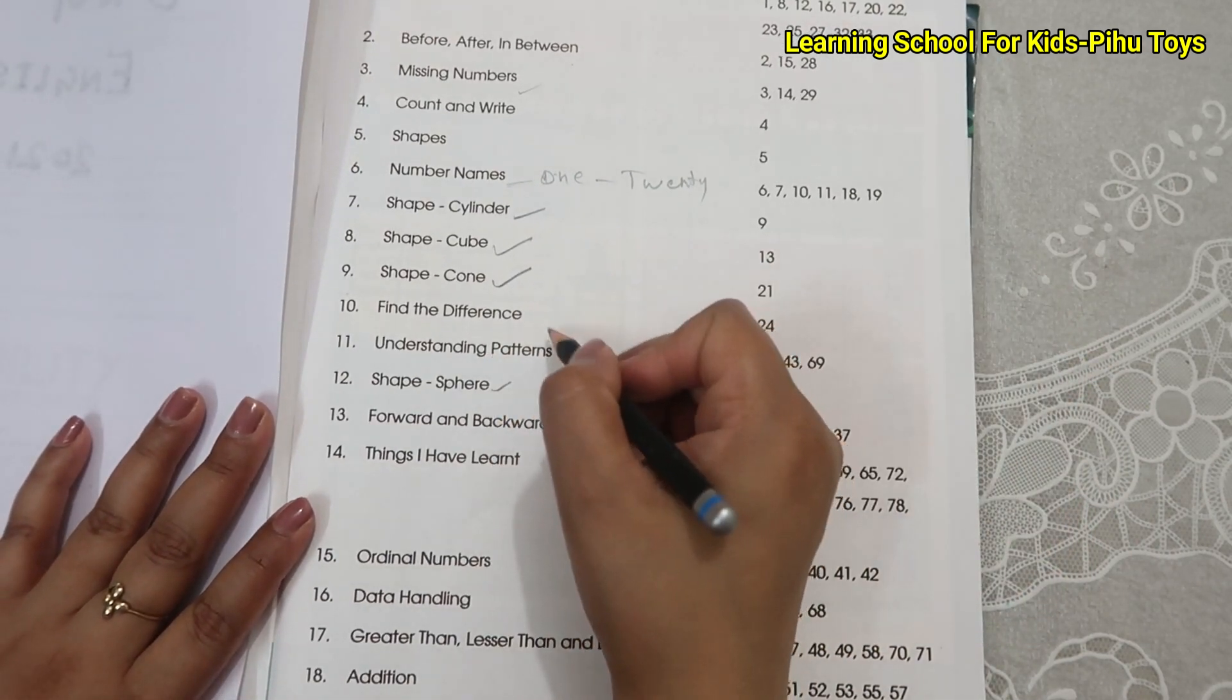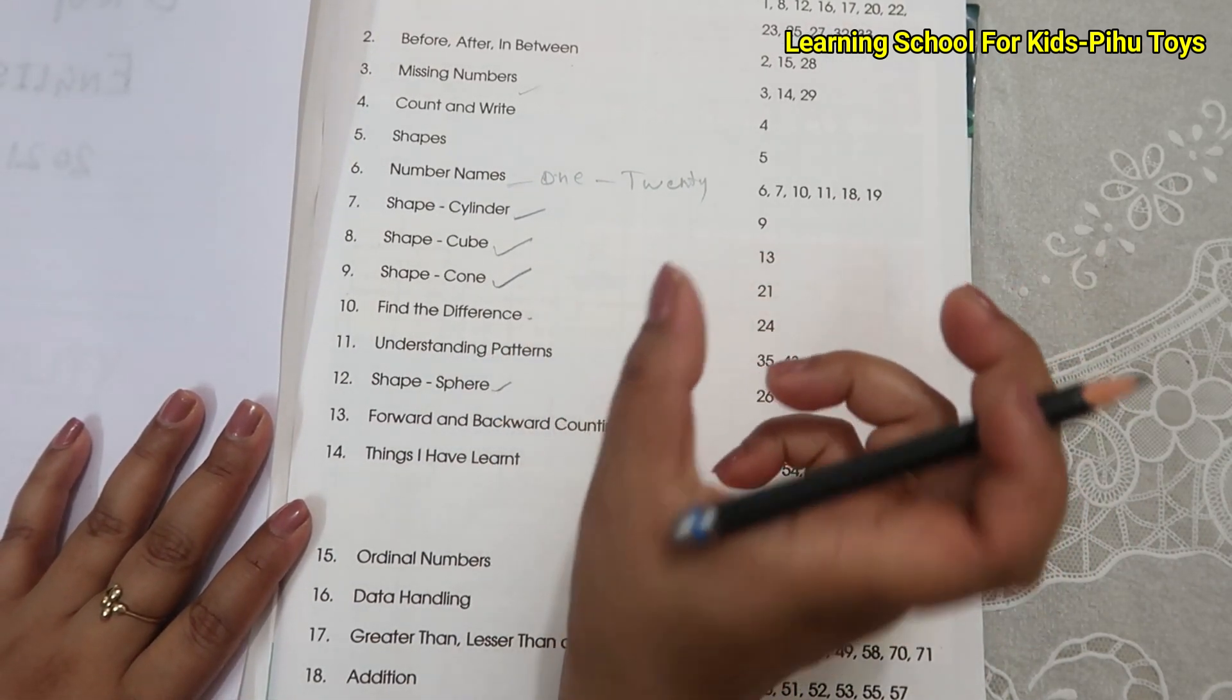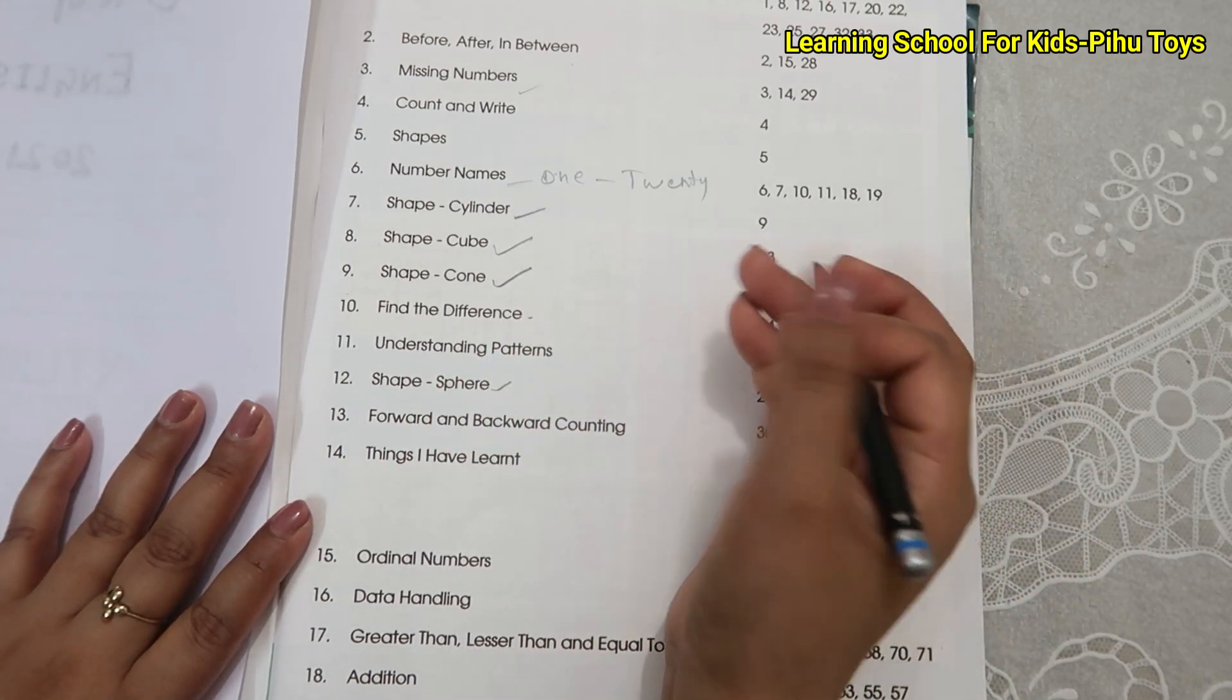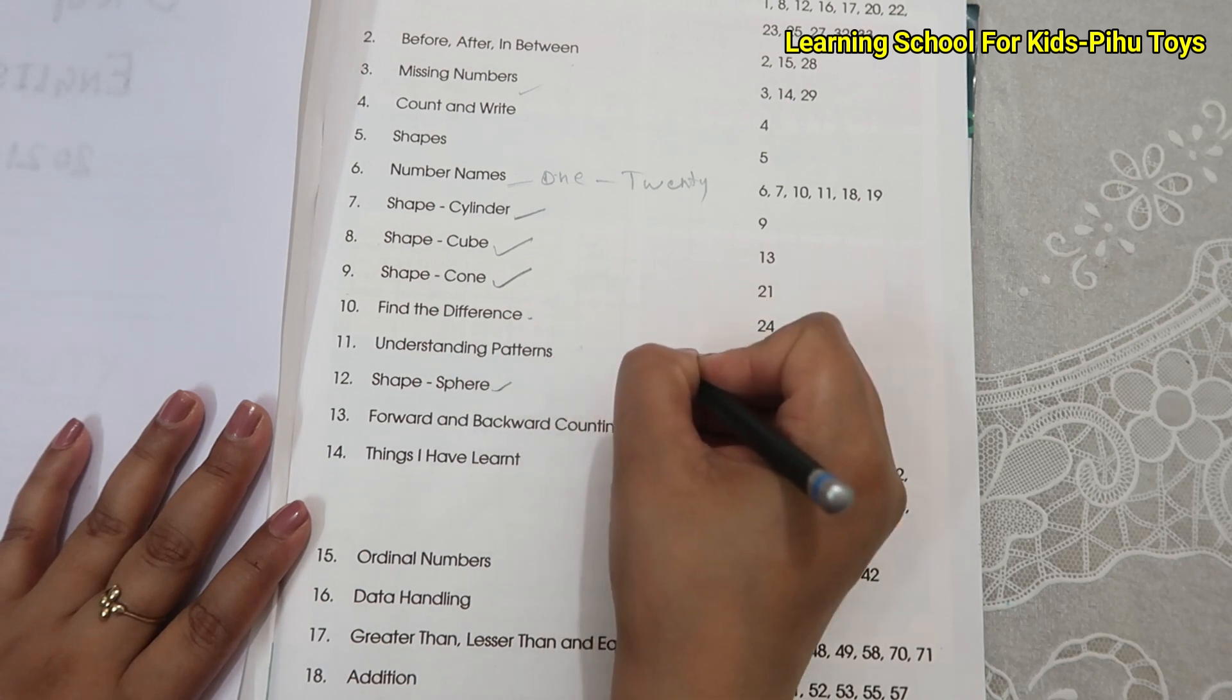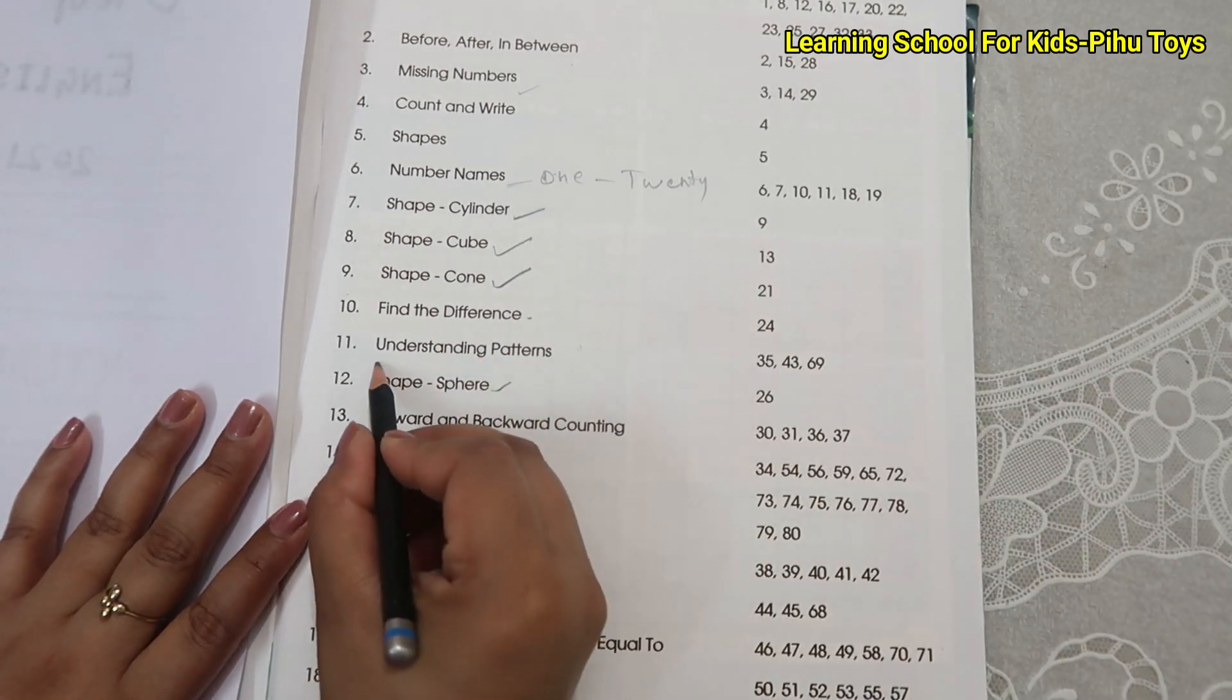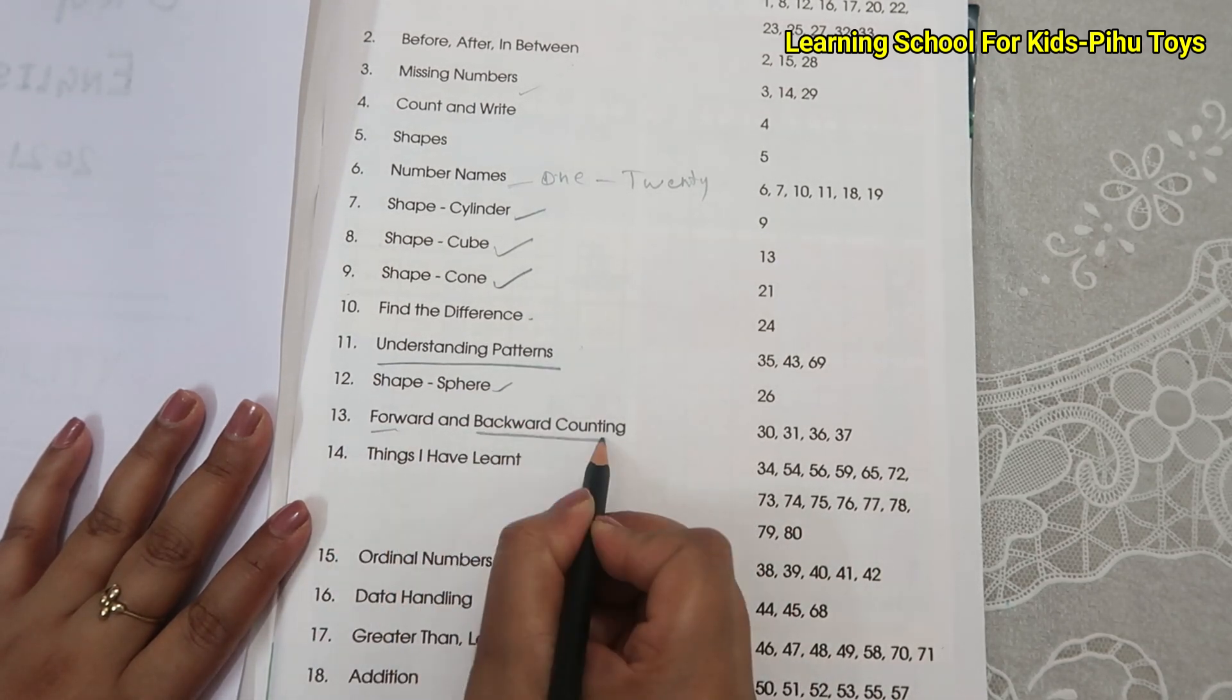We find the differences between the two objects, understand patterns, learn what will come after this pattern, and learn forward and backward counting.